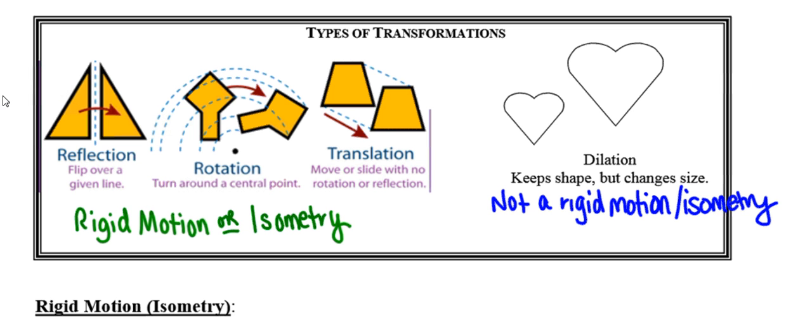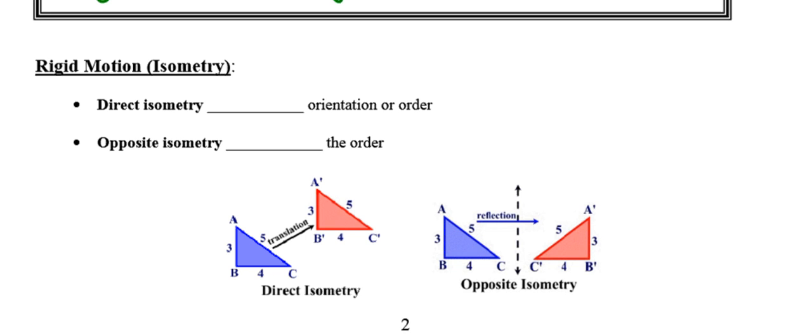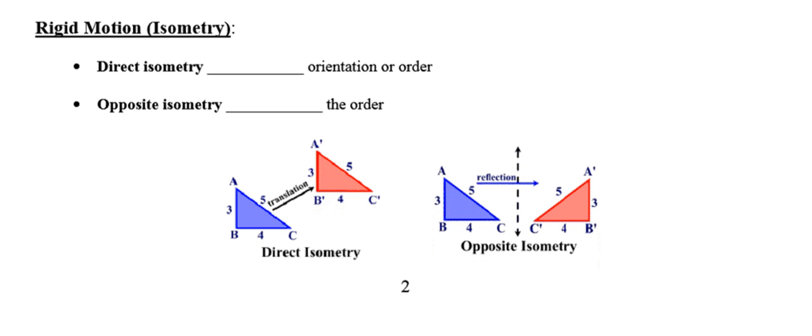Alright, so as far as a definition for rigid motion or isometry, we say that a transformation is a rigid motion or an isometry if the new image results or the new figure results in an object that's the same size as the original. So keeps, preserves, size, length, distance. You're going to see that word preserves quite a lot in this unit. So preserves just means to keep. So keeps all lengths or distances the same.